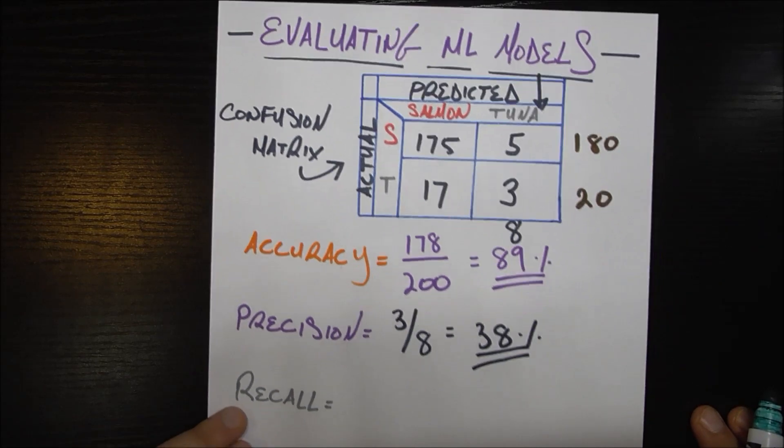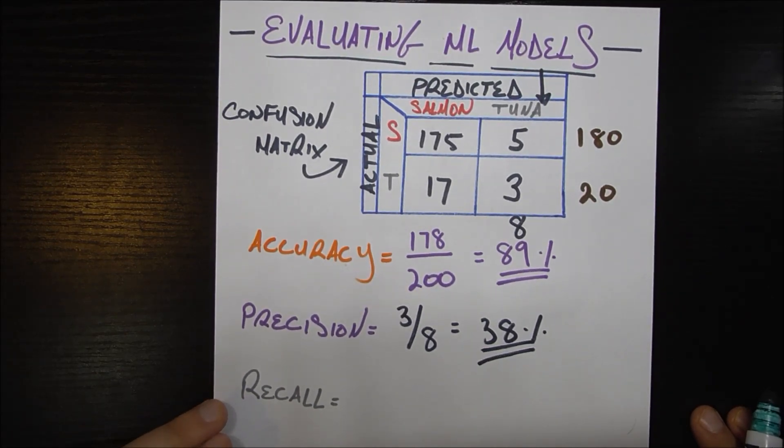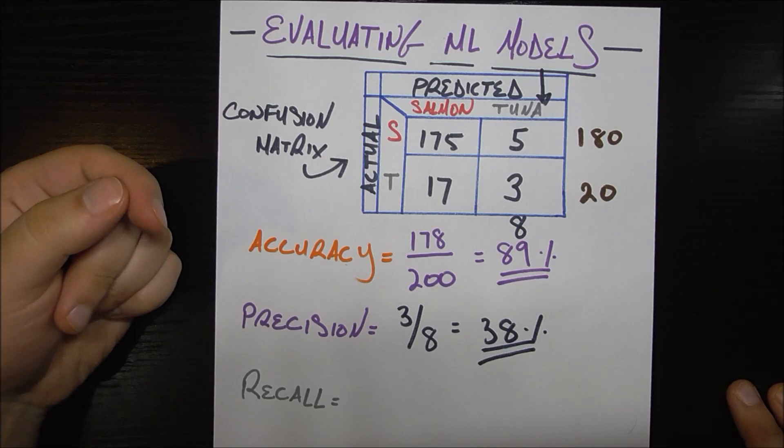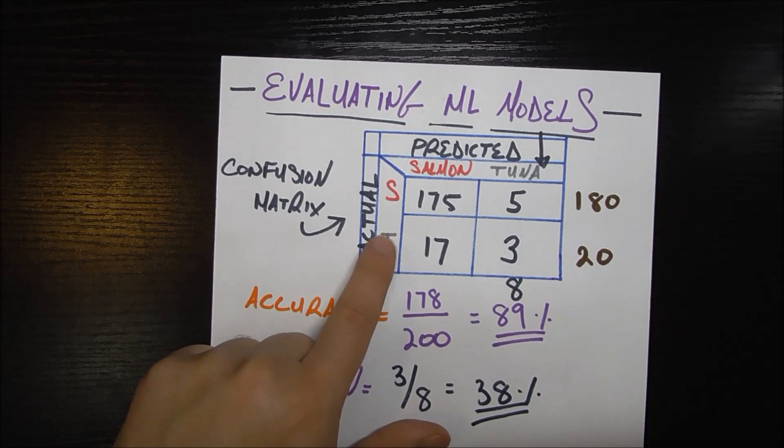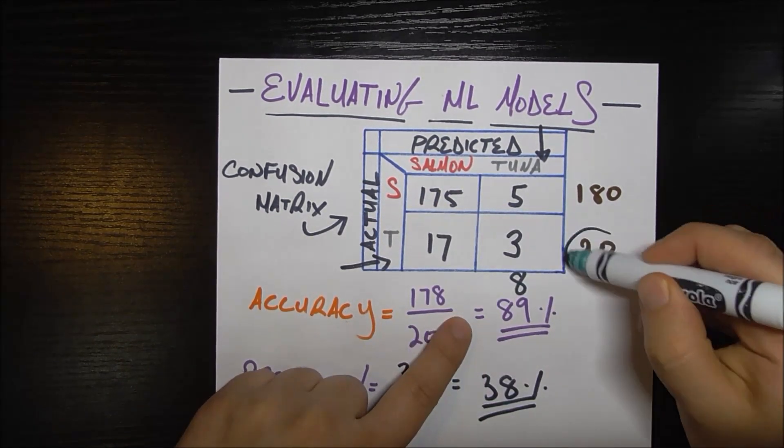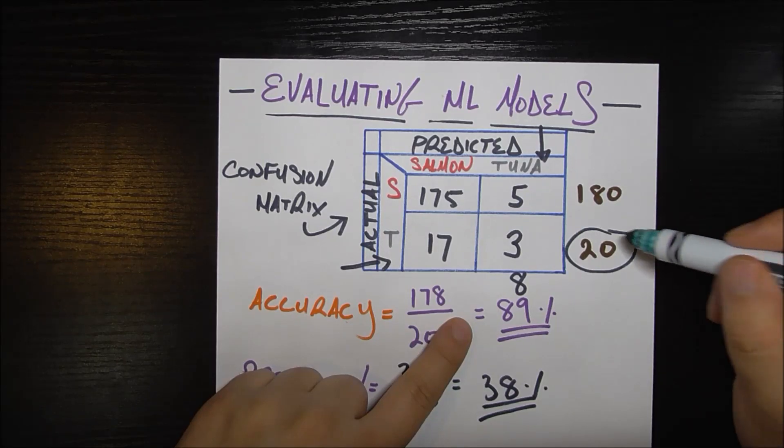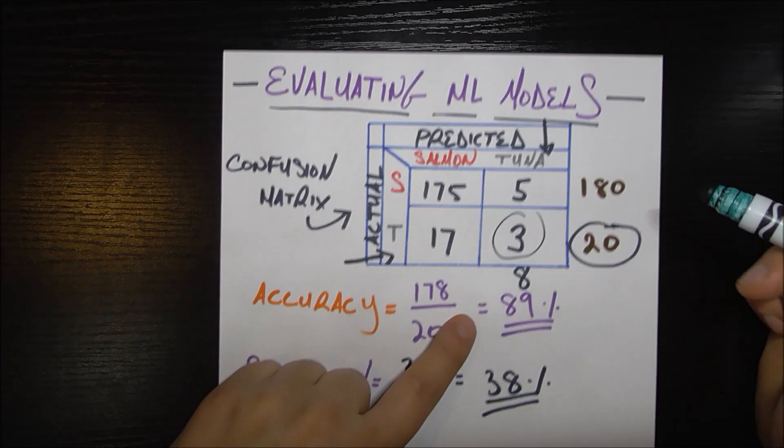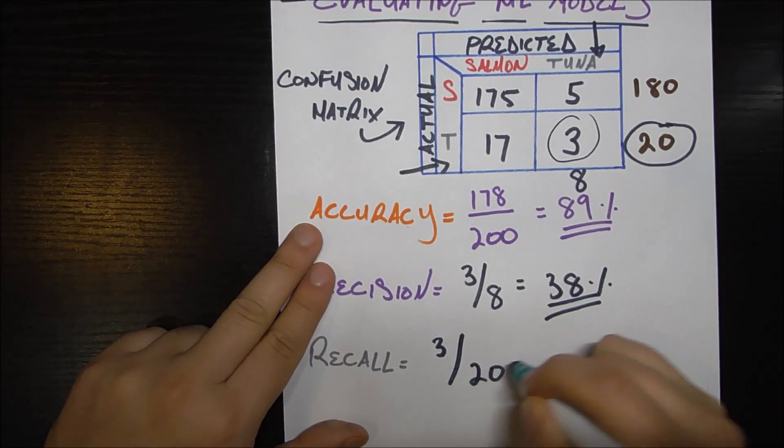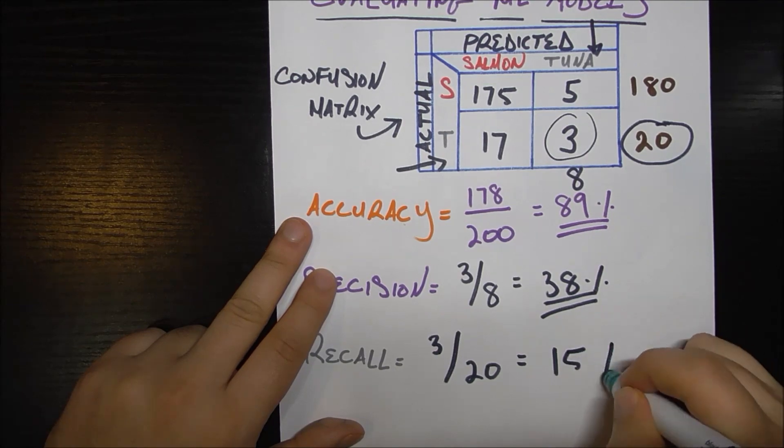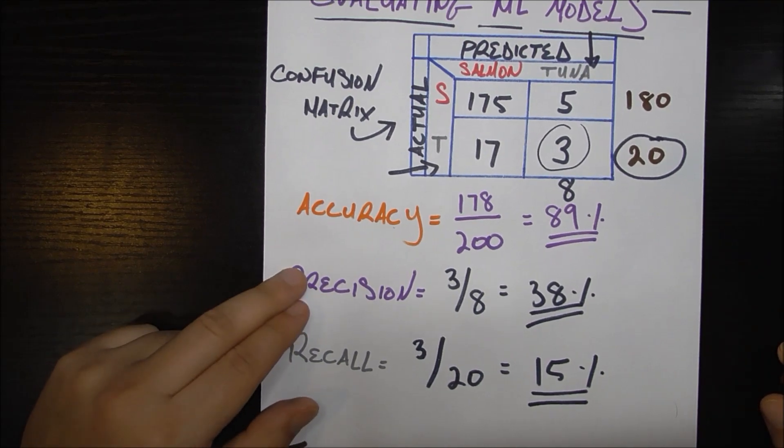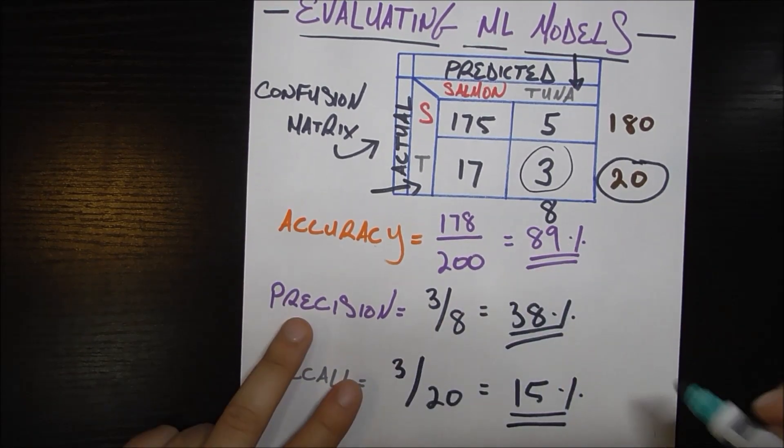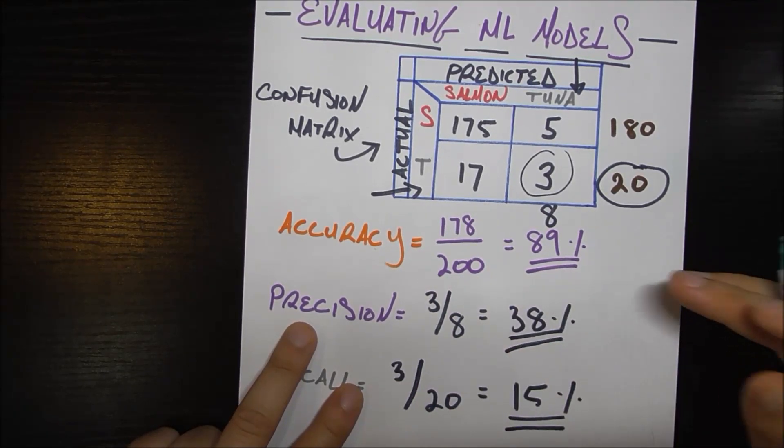Now let's look at a different metric also called recall. Recall measures a slightly different thing with a different notion. Recall measures out of all the things that were actually tuna, how many did I catch as tuna? That's subtly different because now we're looking at this row of things actually being tuna. Out of these 20 fish that were actually tuna, how many did I correctly classify as tuna? It turns out I got only three of them. So that would be three out of 20 which is a measly 15 percent. So our recall is very very very low. Our precision is also rather low but our accuracy is high, so looking at accuracy by itself we wouldn't know the full story. We need to look at precision and recall as well to see how good of a job we're doing.